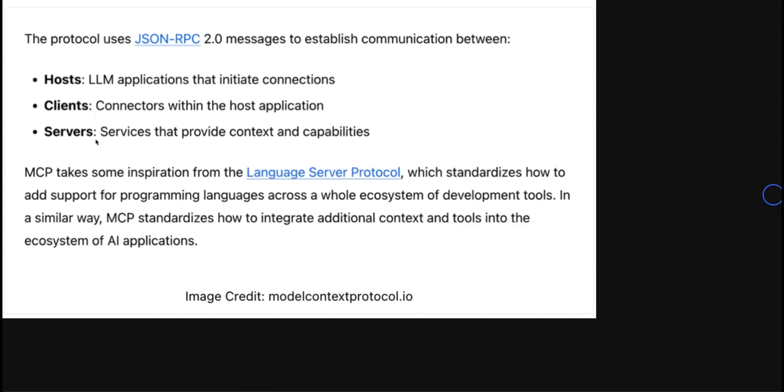These are lightweight programs that each expose specific capabilities through standard model context protocol. These let you connect to local data sources like files, databases and services on your computer or remote services such as external systems available with the internet through the API. You need to have a server that is actually exposing either local data storage or remote services. Then you have clients which are communicating with the server and hosts are the actual AI applications that are using the servers through the clients.